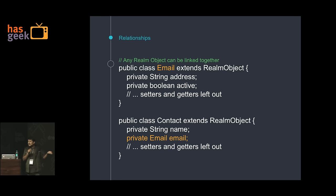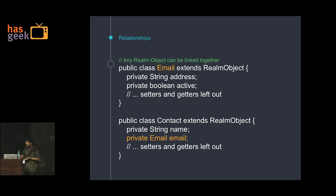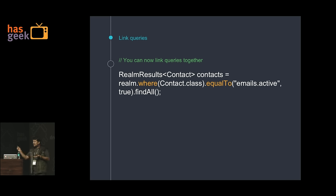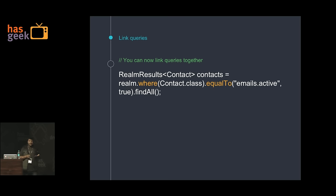Take this example: you have a class called Email with some attributes, and a class called Contacts with Email as an attribute. You are having a realm attribute inside another — defining a relationship of Email with Contacts. To query this, you can say find all contacts where email.active is true. It will fetch emails, then the .active field, and return results. The power is amazing — you can combine everything together, chain queries, and do whatever you want with very fast performance.